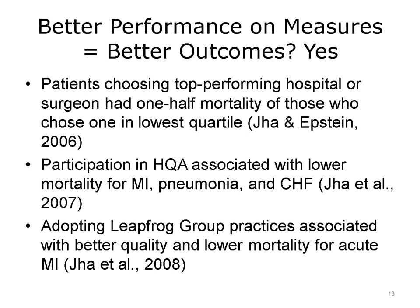Does better performance on process measures lead to better outcomes? Yes and no. Patients who choose a top-performing hospital or surgeon, one in the top quartile, have one-half the mortality rate of those who choose a hospital or surgeon in the lowest quartile. It has also been shown that participation in the Hospital Quality Alliance by hospitals is associated with lower mortality for myocardial infarction, or MI, pneumonia, and congestive heart failure, CHF. In addition, it has been shown that adopting the leapfrog group practices is associated with better quality and lower mortality for acute MI. So, there are some instances where better performance on quality measures leads to better outcomes.